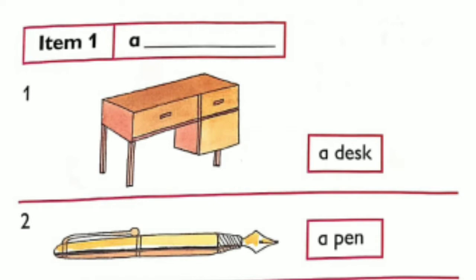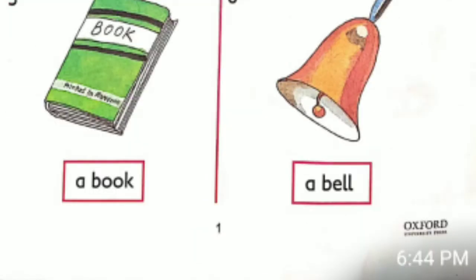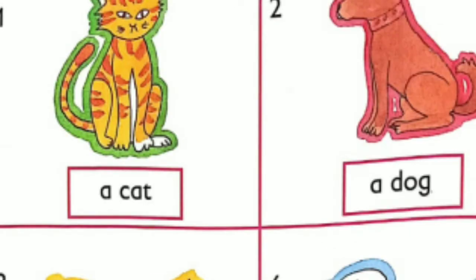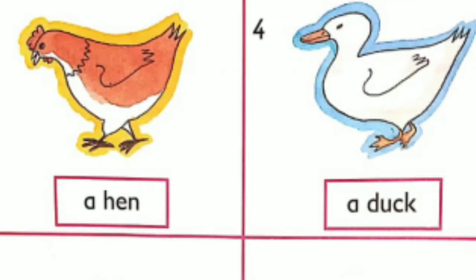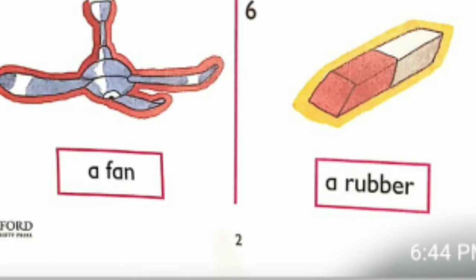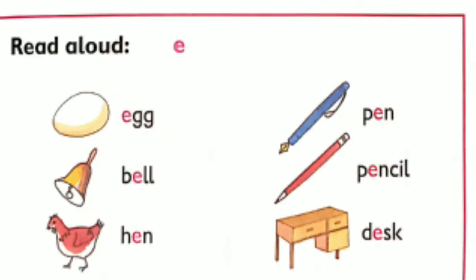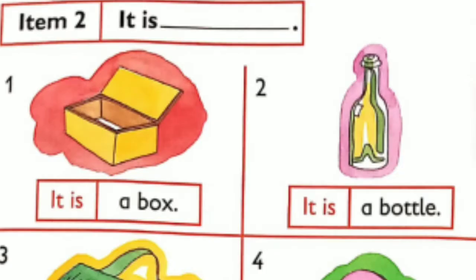Vocabulary with articles: a desk, a pen, a pencil, a ruler, a book, a bell, a kid, a dog, a hand, a duck, a fan, a rubber, an apple, an orange, an egg, an umbrella. Review words: egg, bell, hand, pen, pencil, desk.